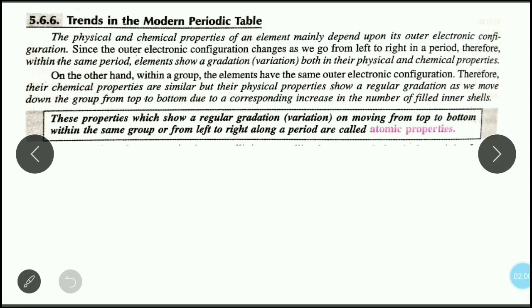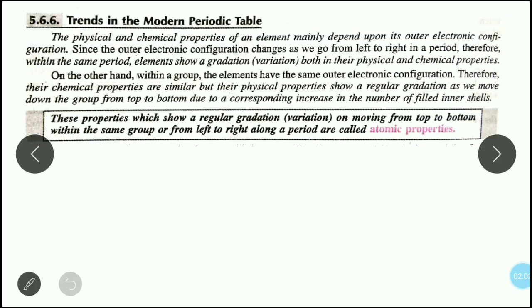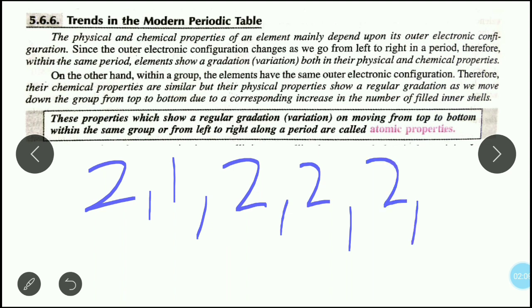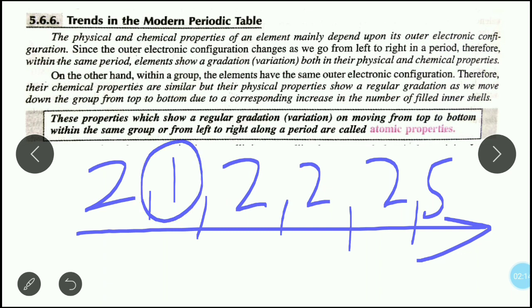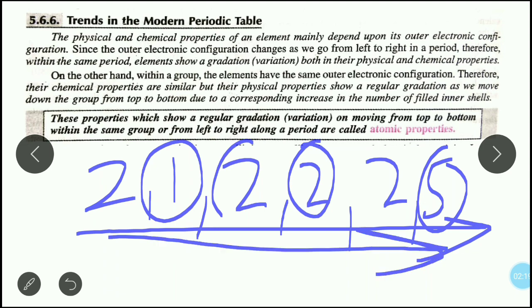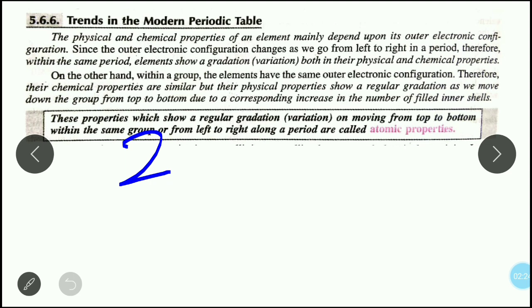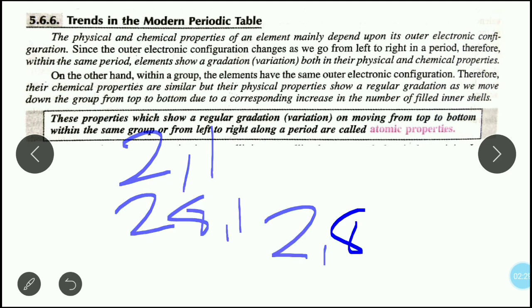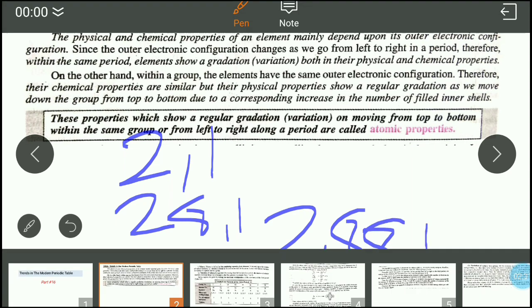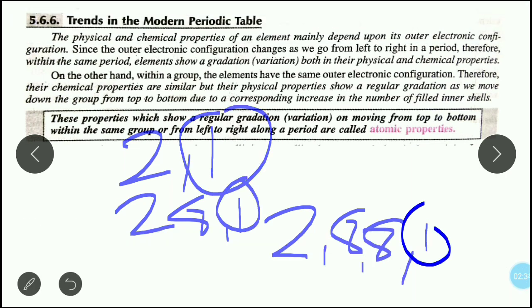When you go across periods, if you look at the outermost electron shell, it changes continuously. Like for lithium it's 2,1, then 2,2, then 2,5 for nitrogen. The outer electron shell changes as you go to periods. But if you look at groups - first lithium has 2,1, then 2,8,1, then 2,8,8,1. If you look at the valence electrons, they are the same - one in each case.